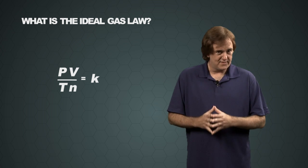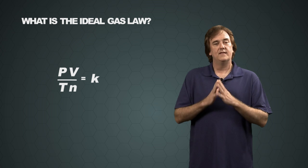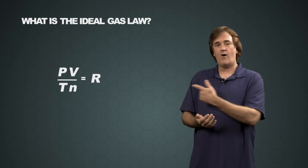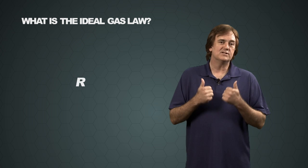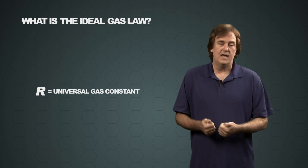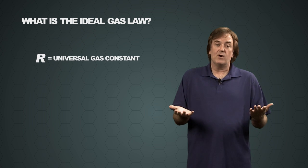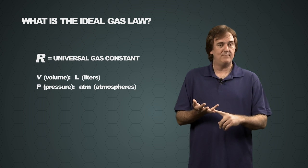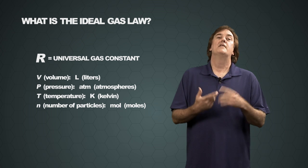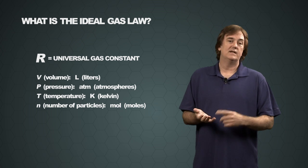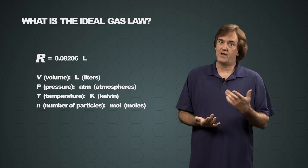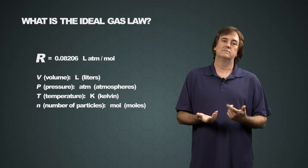But this time the constant is rather special — this constant has a name. We're going to change it from K to an R. The R is the universal gas constant, which has a specific value. If you choose to use liters, atmospheres, and Kelvin temperature in moles — which we mostly do — then the value you get for R is 0.08206 liter atmospheres per mole Kelvin.